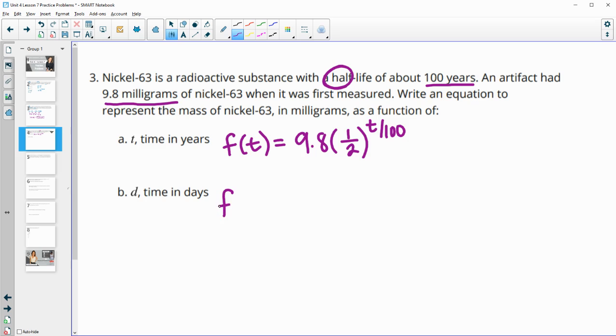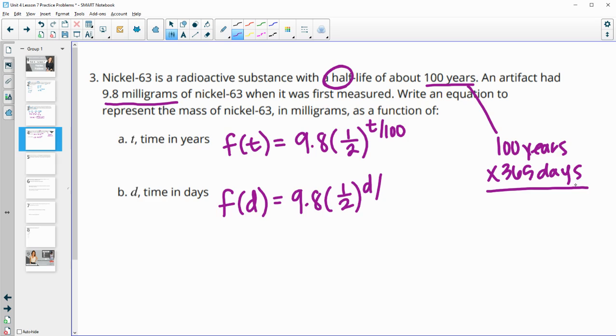If we're writing it as a function of days, we have to figure out how many days 100 years is. 100 years times 365 days in every year gives us 36,500 days. So we would have to take and divide that exponent by 36,500.